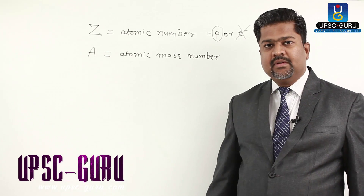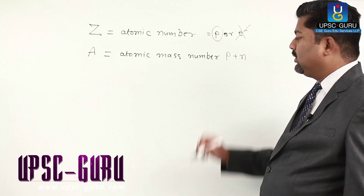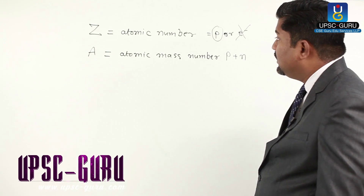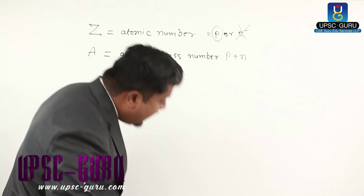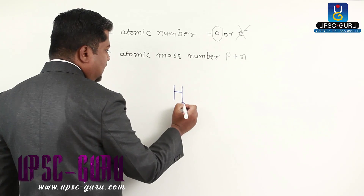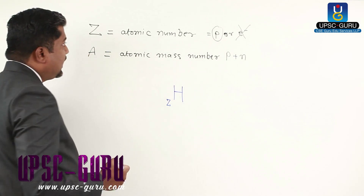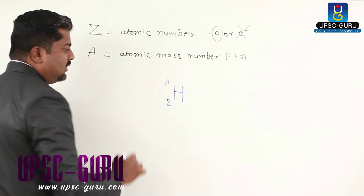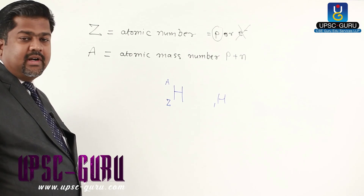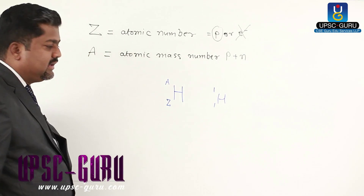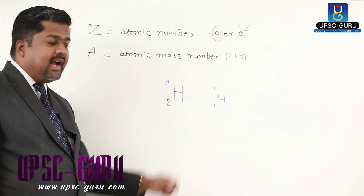Right now, focus on the number of protons only. Mass number: the total number of protons plus neutrons present in any atom is called the mass number. These two are characteristics of an atom. For example, for hydrogen, we write its symbol H. Atomic number is denoted by Z, and the atomic mass number is written alongside. In hydrogen, there is only one proton, so atomic number is 1 and mass number is also 1, since no neutrons are present.